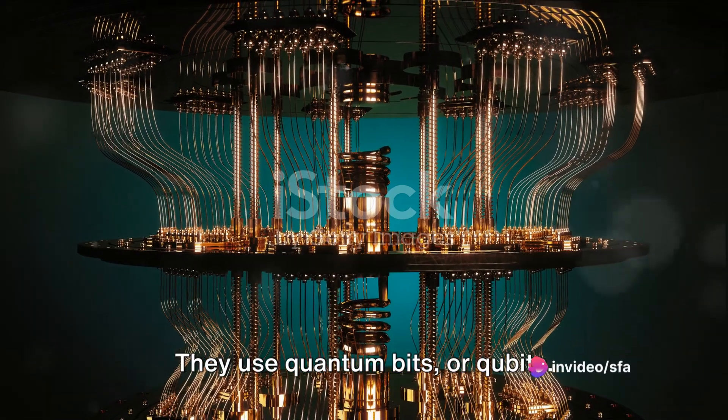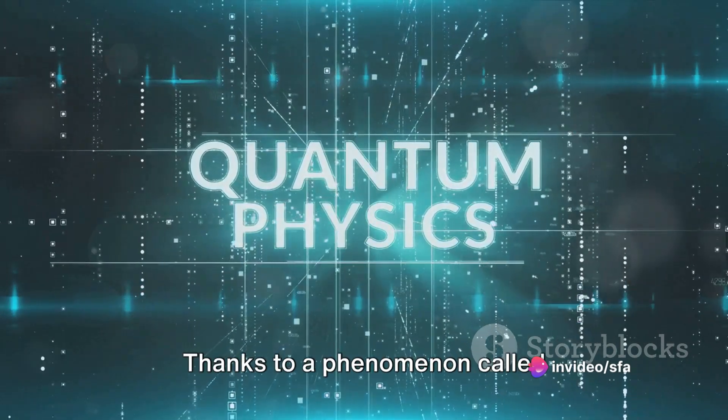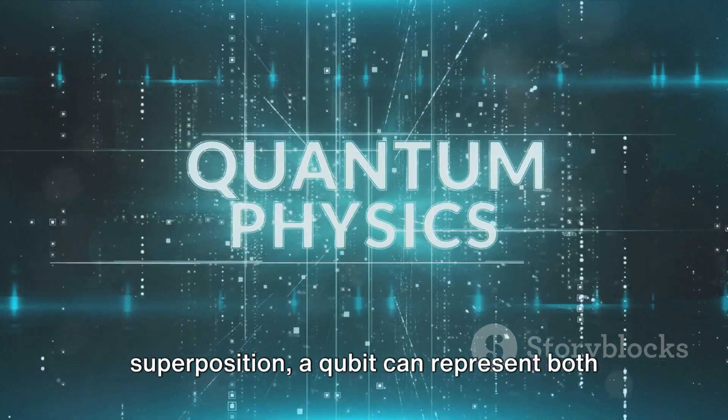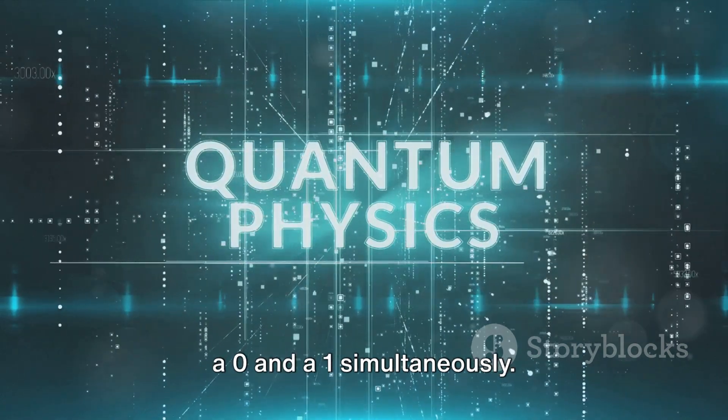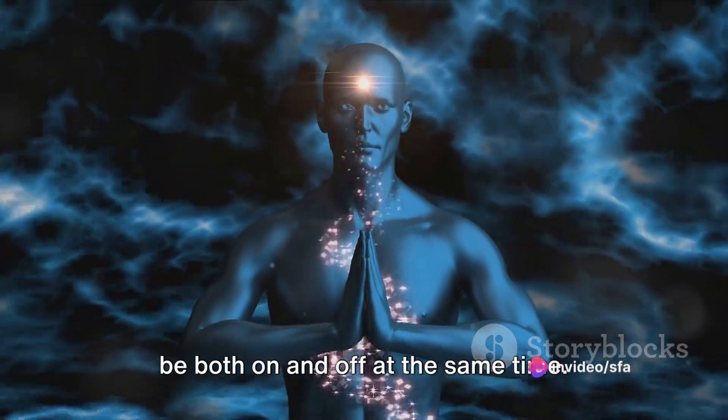They use quantum bits, or qubits. And these qubits don't play by the same rules. Thanks to a phenomenon called superposition, a qubit can represent both a zero and a one simultaneously. It's like having a light switch that can be both on and off at the same time.